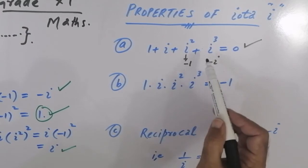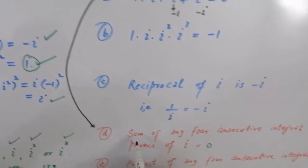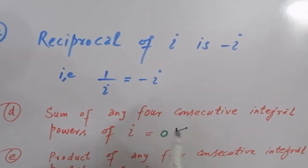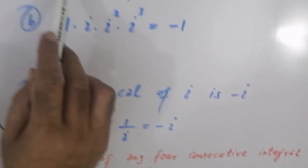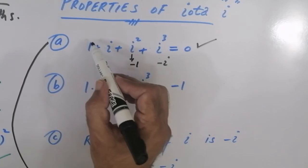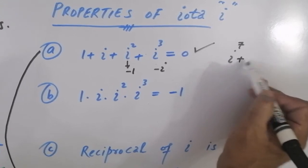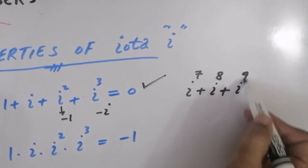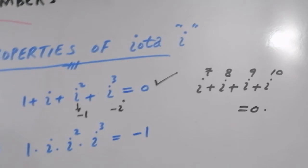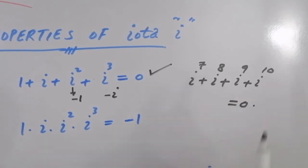ہم اس result کو generalize بھی کر سکتے ہیں: the sum of any 4 consecutive integral powers of IOTA is zero۔ یہ ضروری نہیں کہ IOTA کی power zero سے شروع ہو — جیسے IOTA⁷ + IOTA⁸ + IOTA⁹ + IOTA¹⁰ بھی ہمیشہ zero ہوگا، بشرطیکہ powers consecutive ہوں اور کوئی missing نہ ہو۔